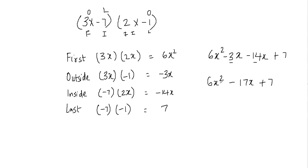Standard form means the terms should be written in decreasing order of the power of x. So this one is x squared (x to the power of 2), this one is x (x to the power of 1), and this one doesn't have x, which you can assume is x to the power of 0. You have to write them in decreasing order of the power of x.